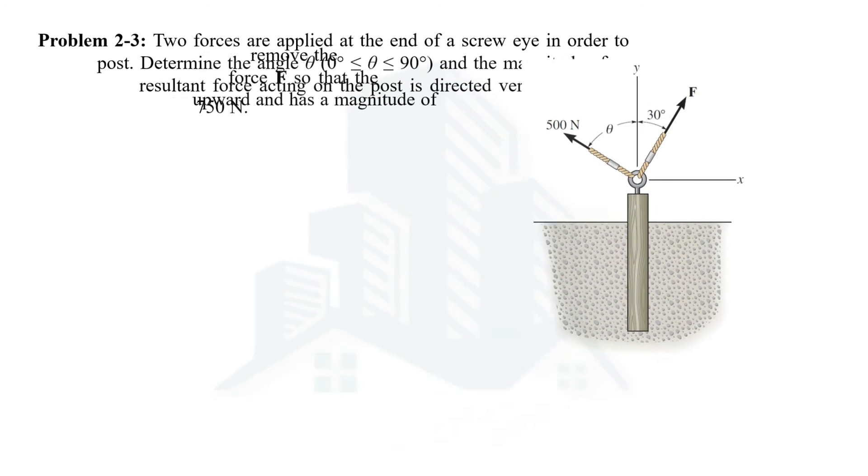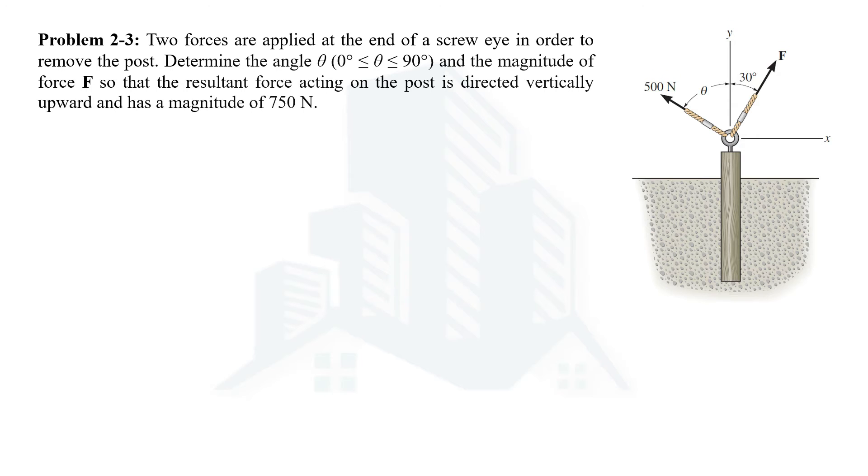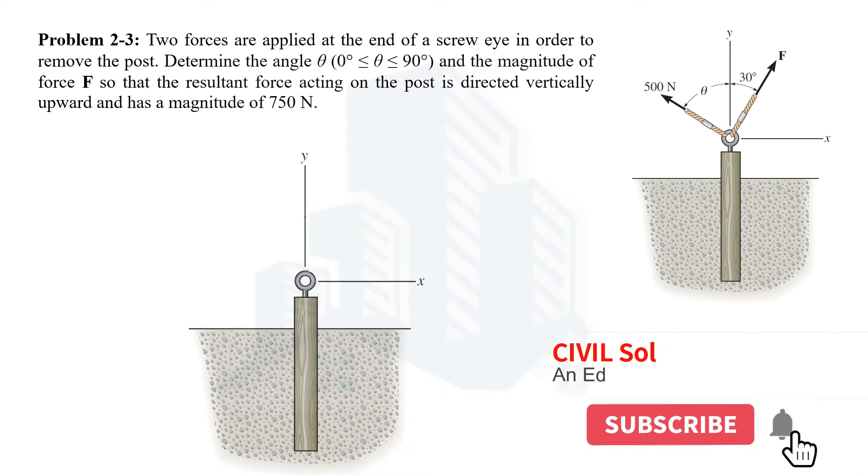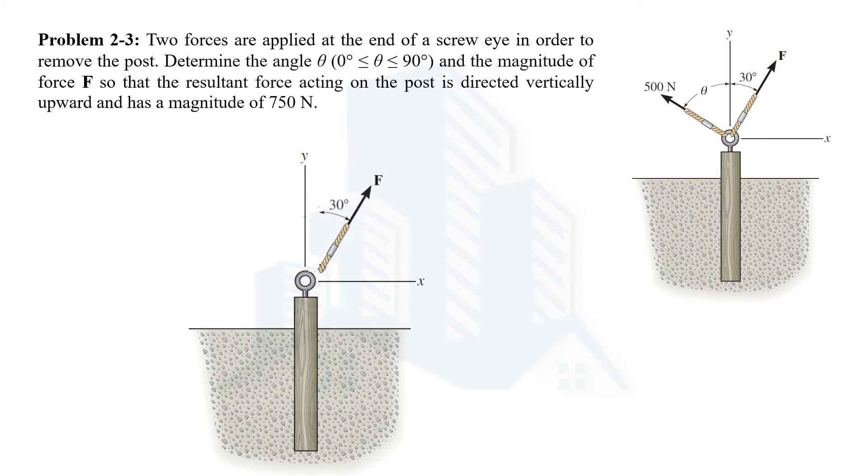Let's solve this problem. Since these two forces are acting on a hook, consider this hook first. Let's apply the first force F which makes an angle of 30 degrees, so we apply this force on the hook. We have another force which is 500 Newton making an angle of theta with the y-axis. So let's apply that force on the hook.